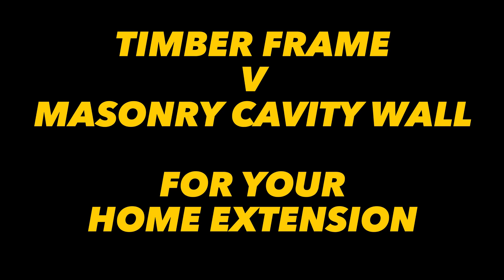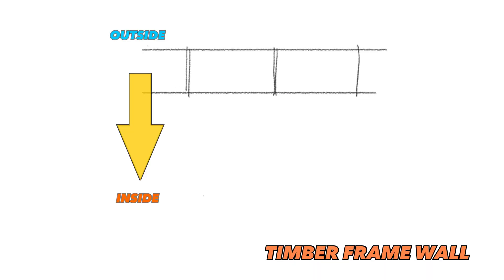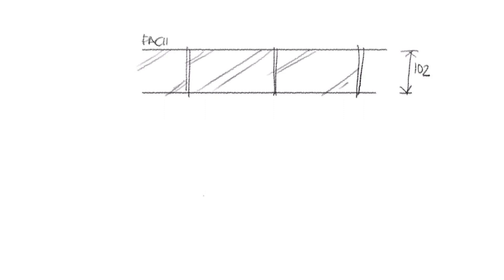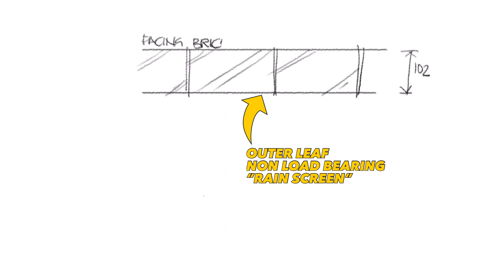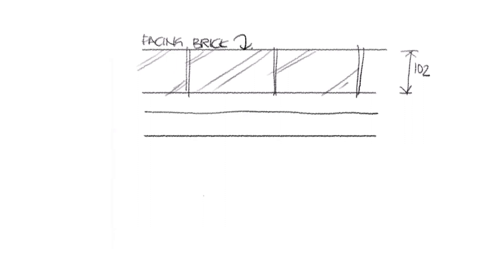We'll always start a comparison with cost. We need to look at the construction and the materials of both wall types to get an idea of what the cost might be, and we'll start with timber frame. From outside to inside we have 102 millimetres of brickwork — this is the outer leaf, and it's that size because 102 millimetres is actually four inches. The outer leaf is just the cladding or a rain screen, and then we have a 50 millimetre cavity.